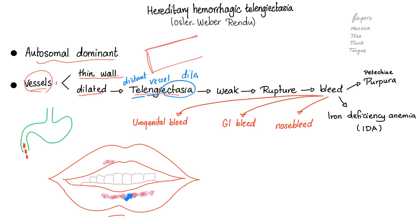What do you mean by distant vessels? Like vessels on your lips — this is not your coronary artery, which is proximal. This is distal vessels. When we have telangiectasia, the vessels are weak, thin, and dilated — they will rupture. When they rupture they will bleed, and I'll get petechiae and purpura in my fingers, mucosa, toes, trunk, tongue, etc. And of course I can develop spontaneous bleeding.